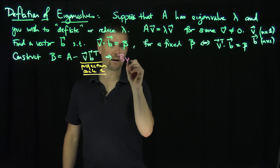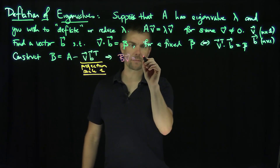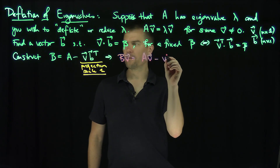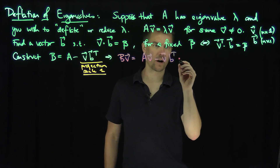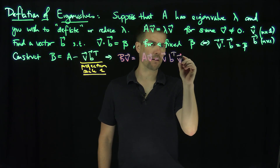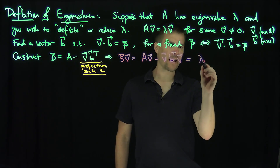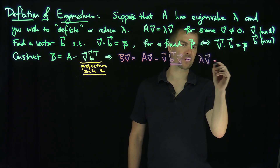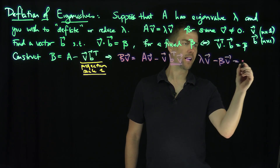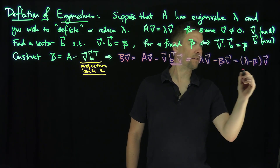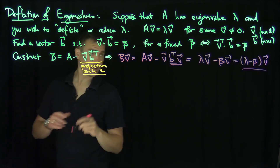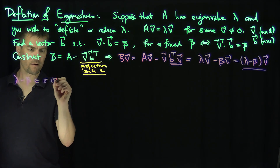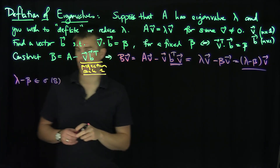Let's compute Bv. We get Bv = Av minus v times (b-transpose v). Now Av = λv, and b-transpose v = β by assumption. So this gives λv minus βv, which equals (λ minus β)v. This tells us that λ minus β is in the spectrum of this new matrix B.